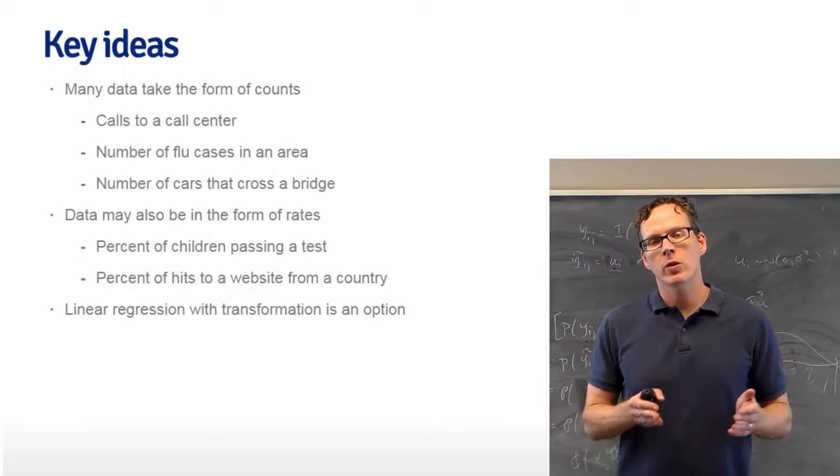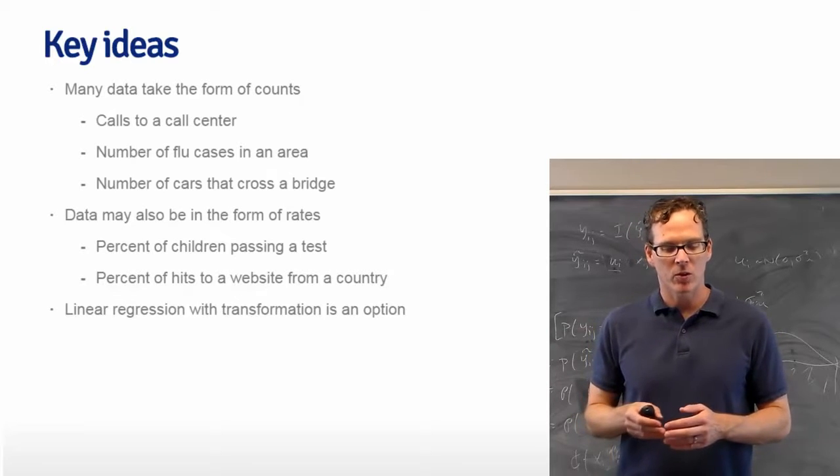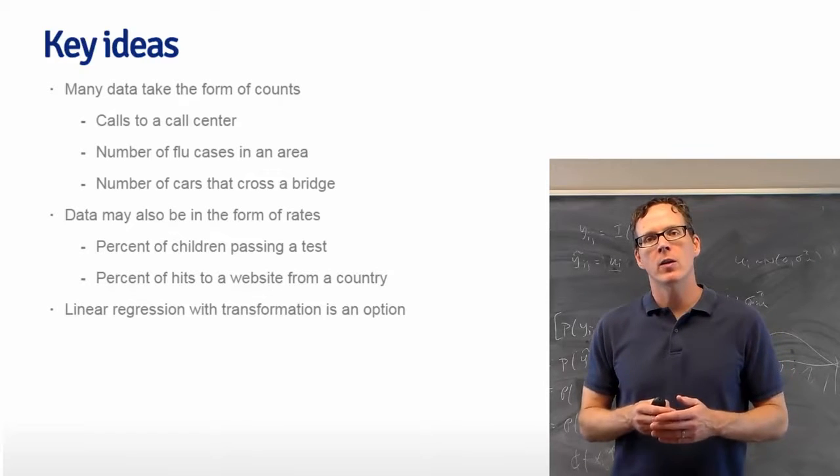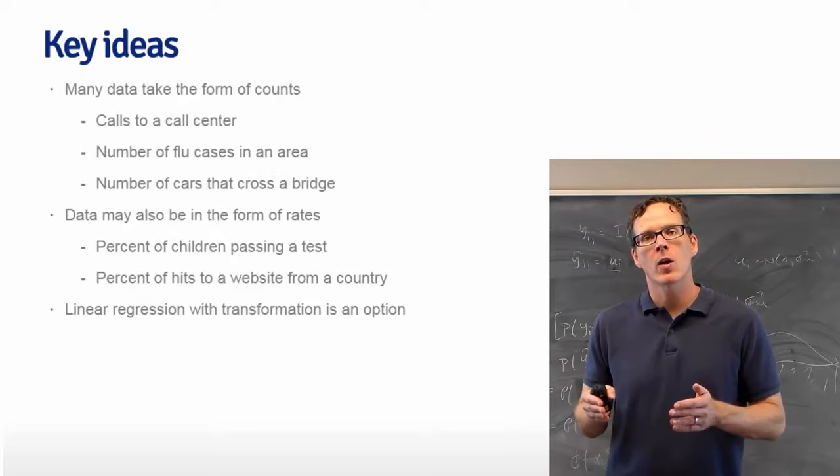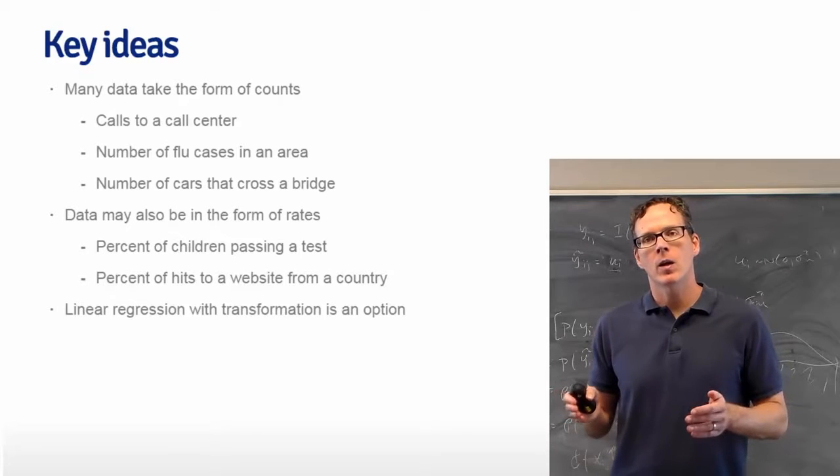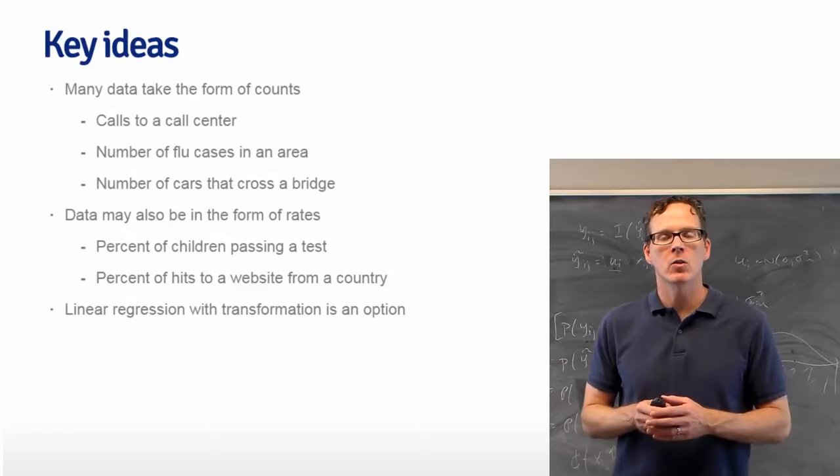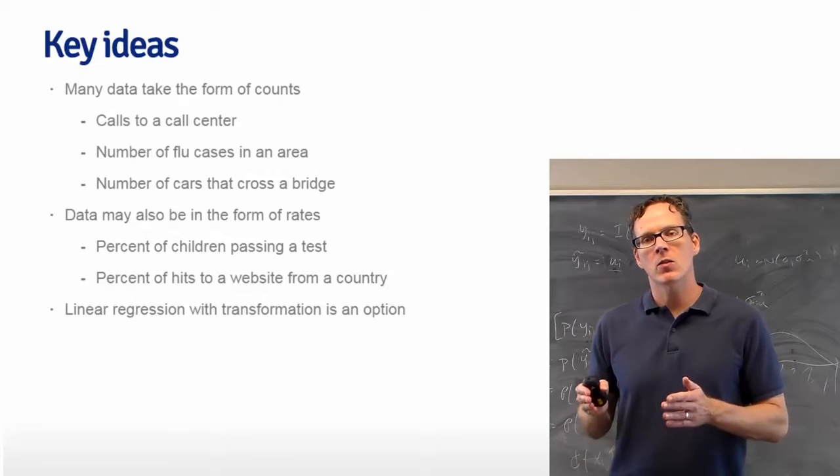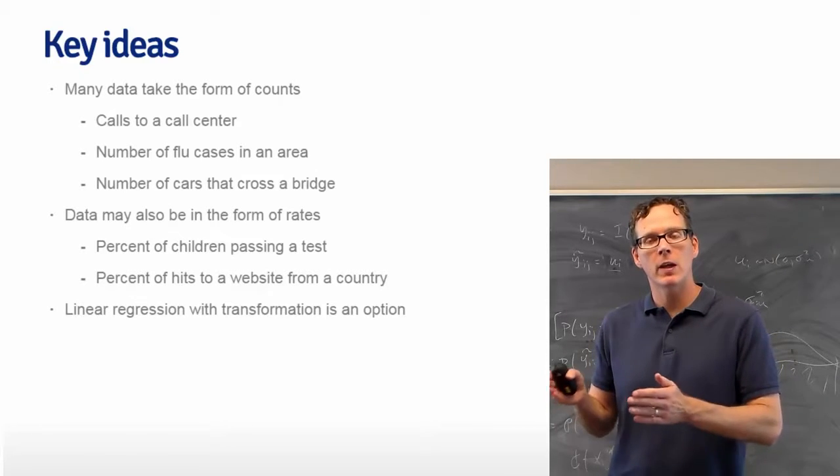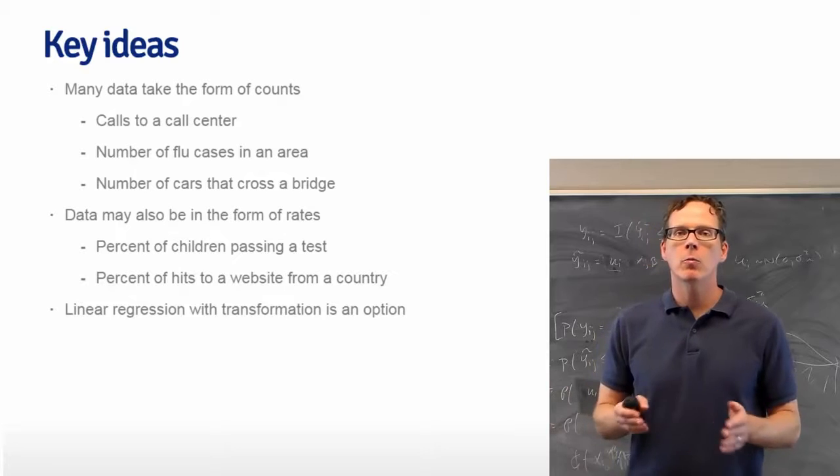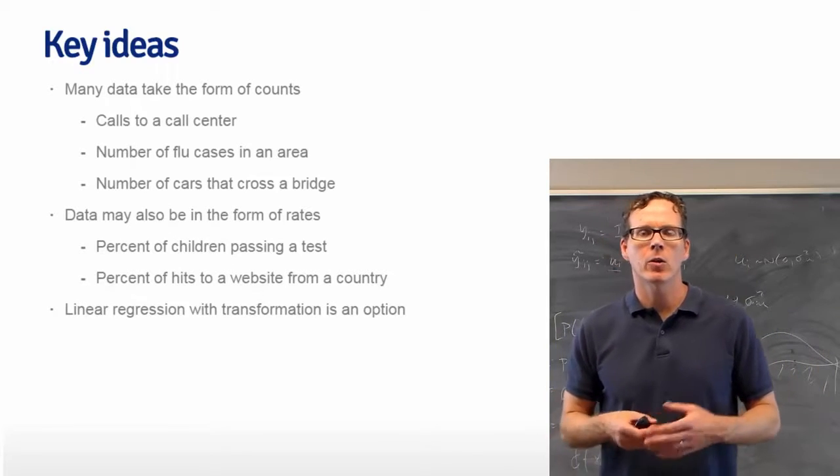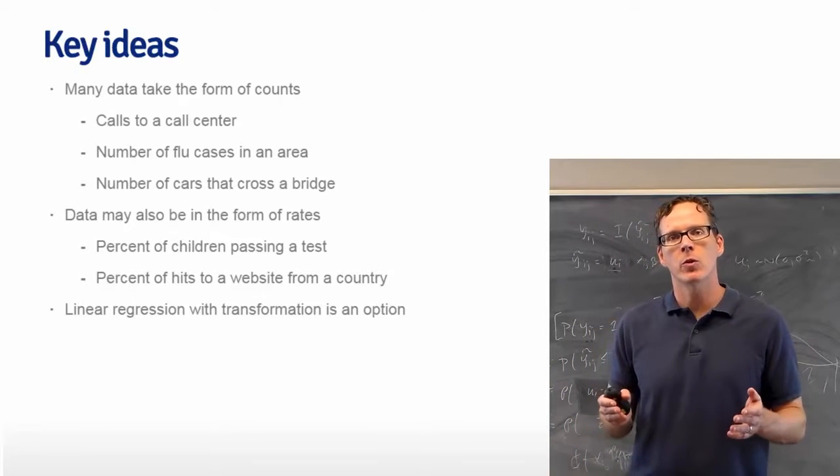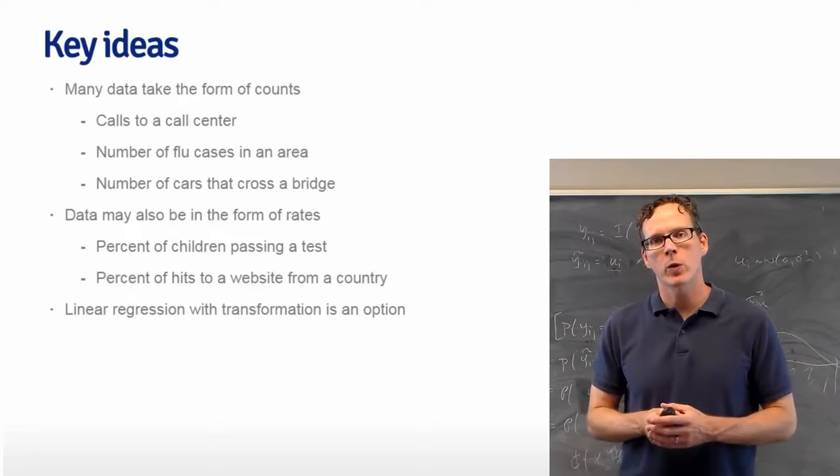In addition to counts, data can come in the form of rates or proportions, such as the percentage of people passing a test. In terms of rates, think about the number of cases or something like that that occur over a unit time. My favorite example is from a pump failure, a nuclear pump failure experiment, where we're looking at the number of instances that nuclear pumps failed per unit time.